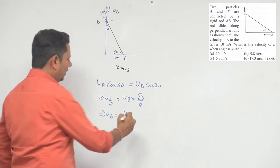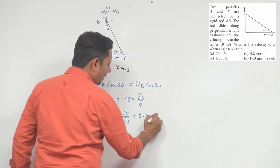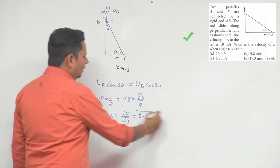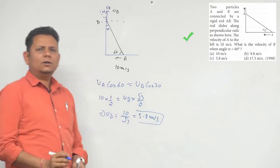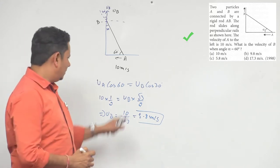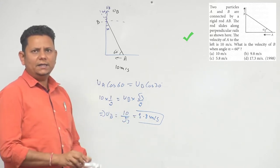So this is the component VB, value 10 by root 3. If we solve it, then it will be 5.8 meters per second. So this will be our final answer, option number C, 5.8 meters per second. This is our answer.